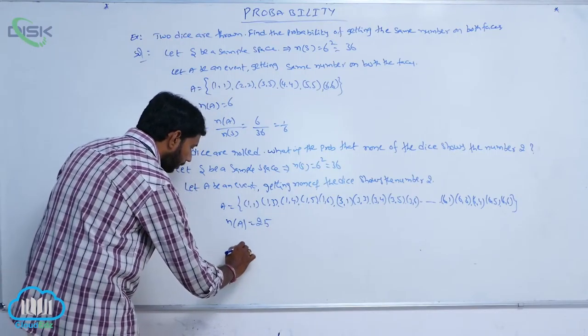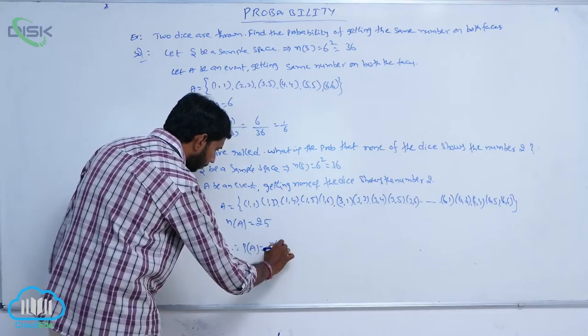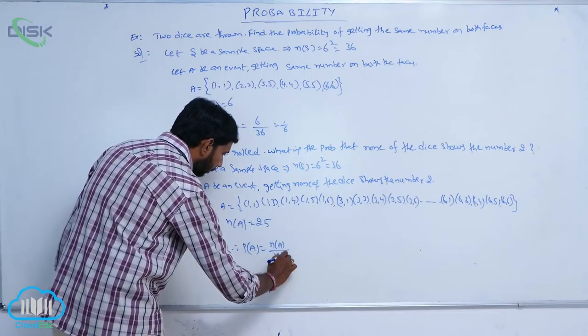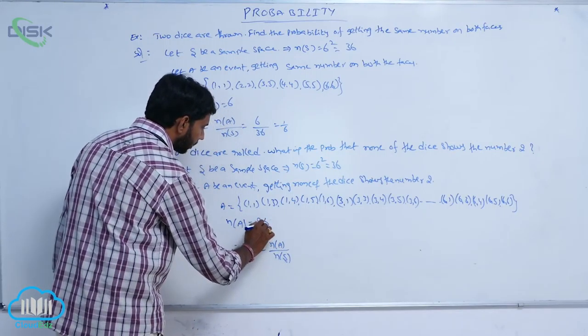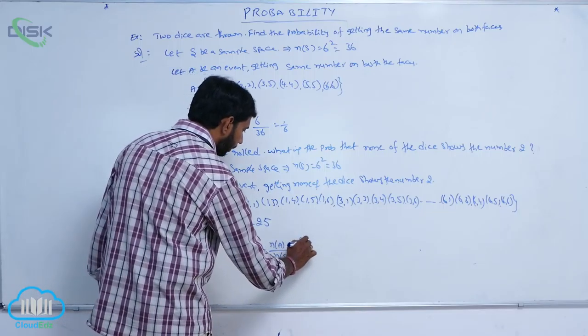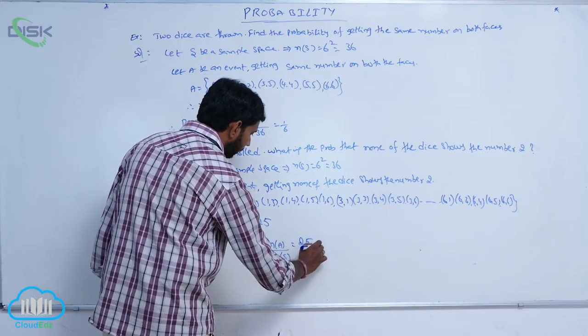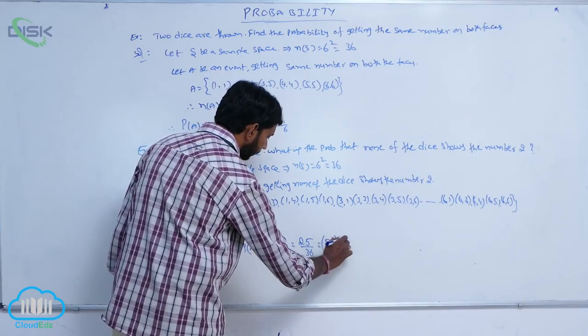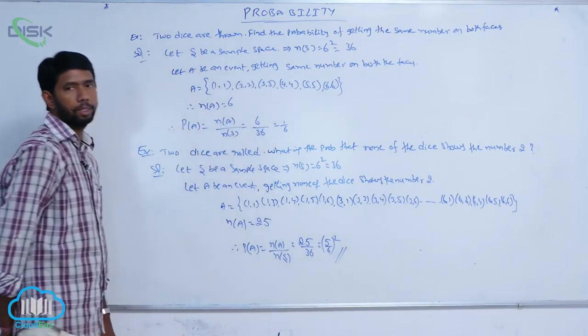Therefore, P of A is equal to N of A by N of S. That is equal to 25 by 36, which equals 5 by 6 whole square.